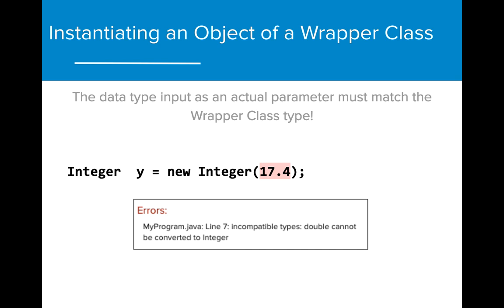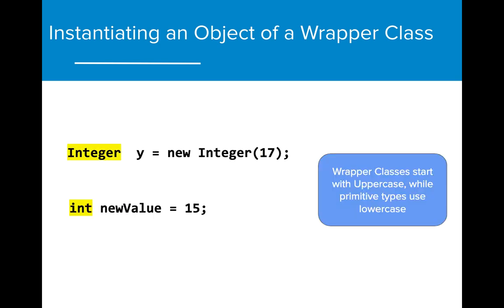Integers can only be given int parameters, and Doubles must be given double values. We can distinguish the primitive types from the wrapper classes by the lettering. If the data type starts with an uppercase letter, then it is a wrapper class. Otherwise, the data type will be the primitive version.